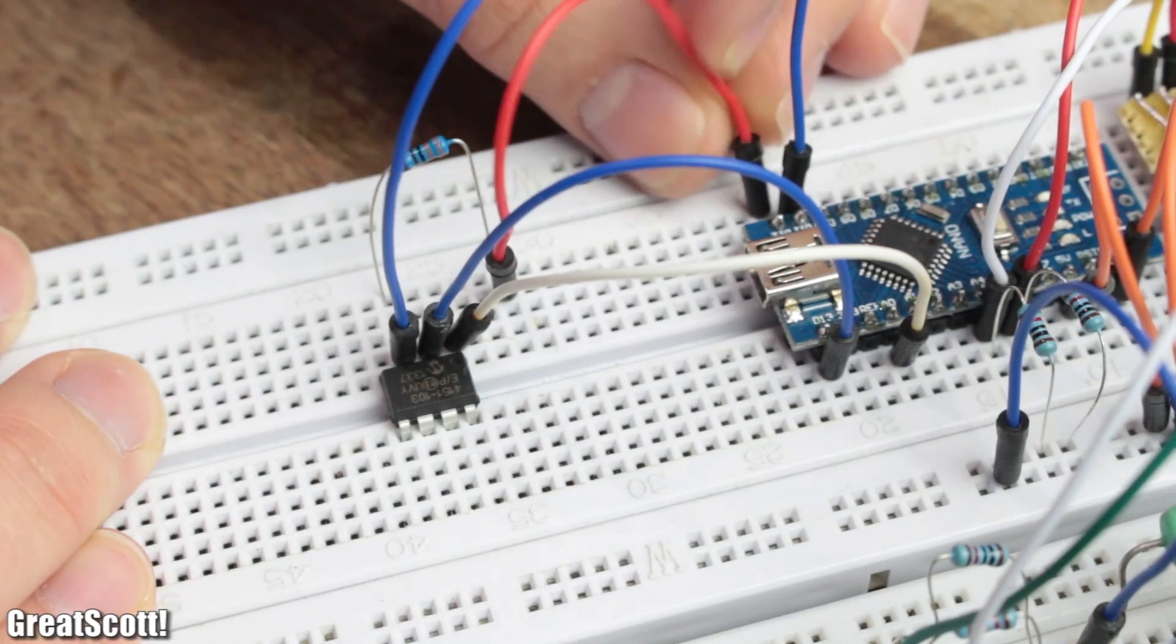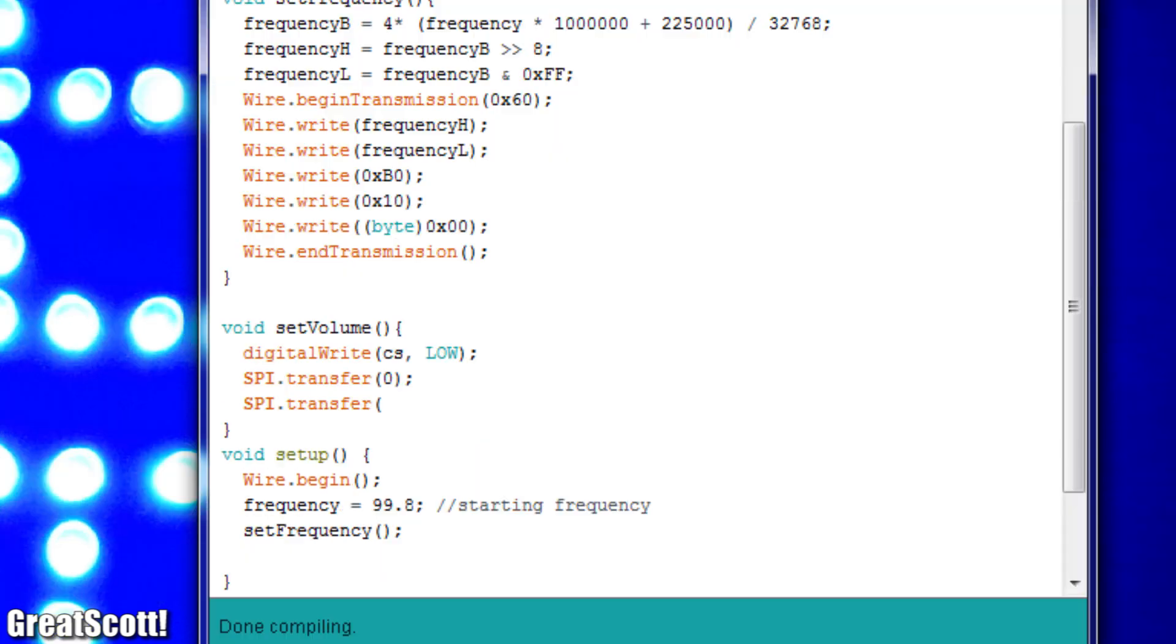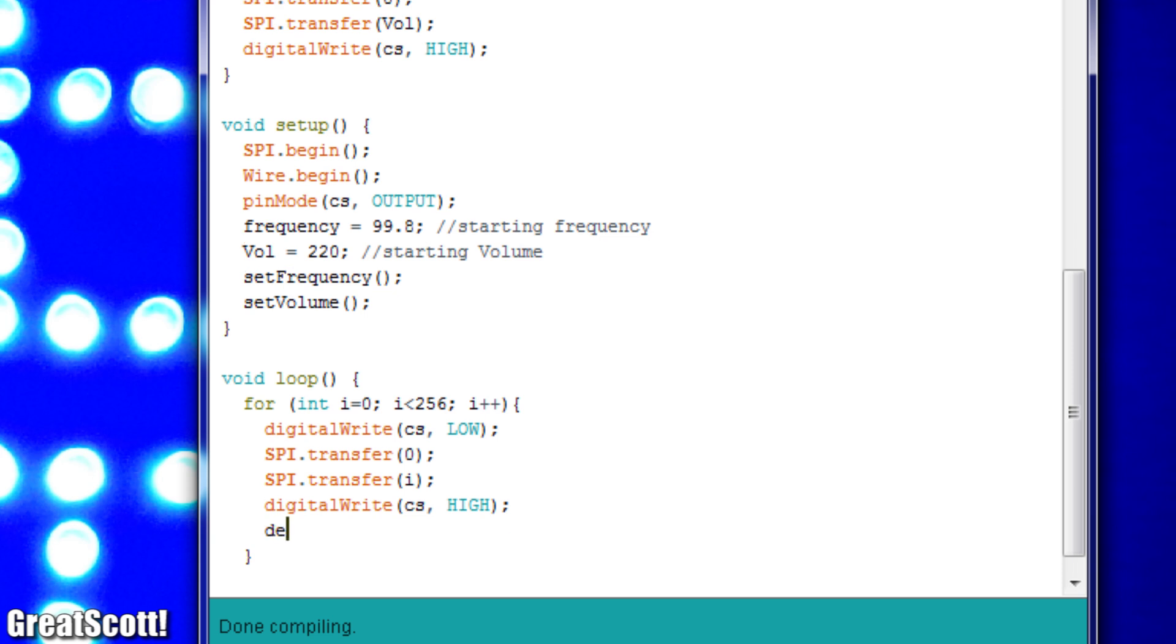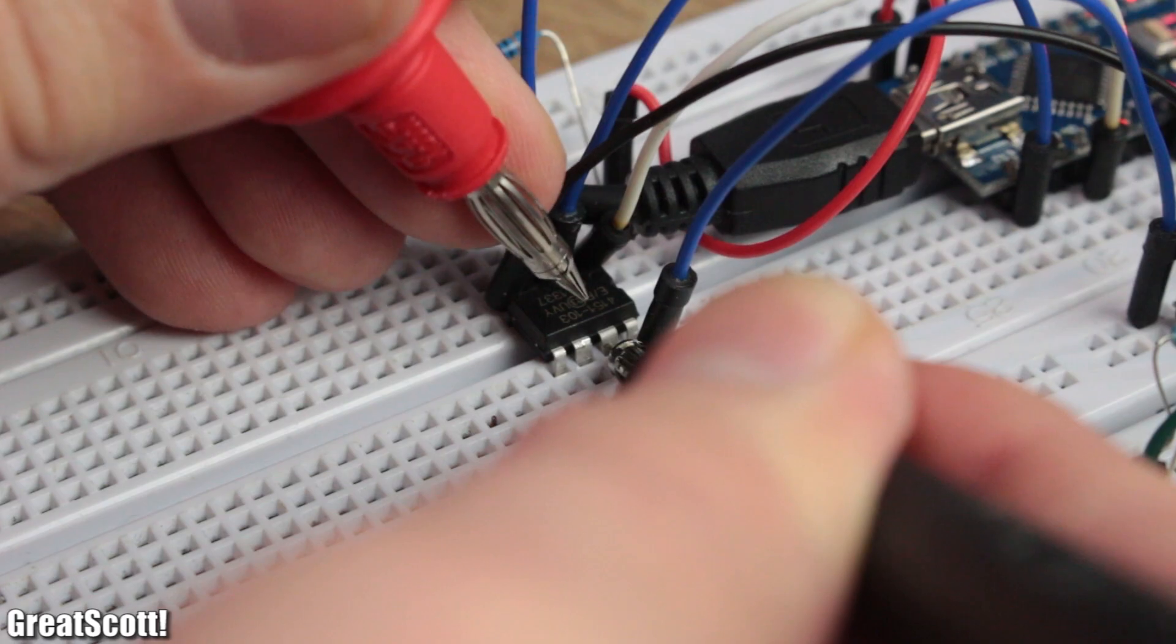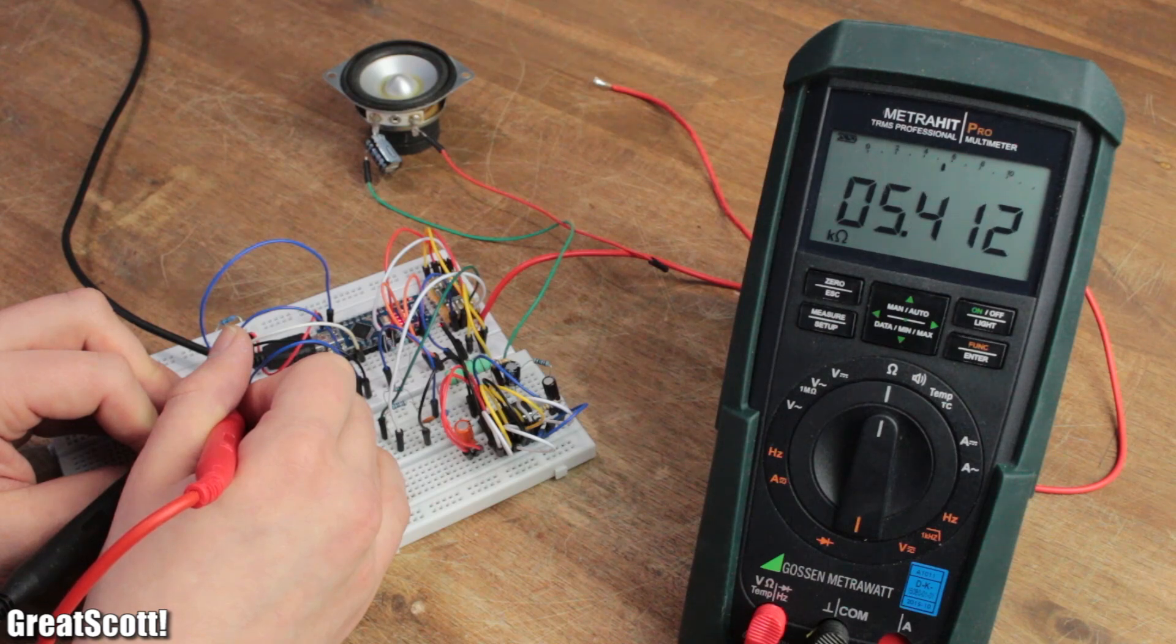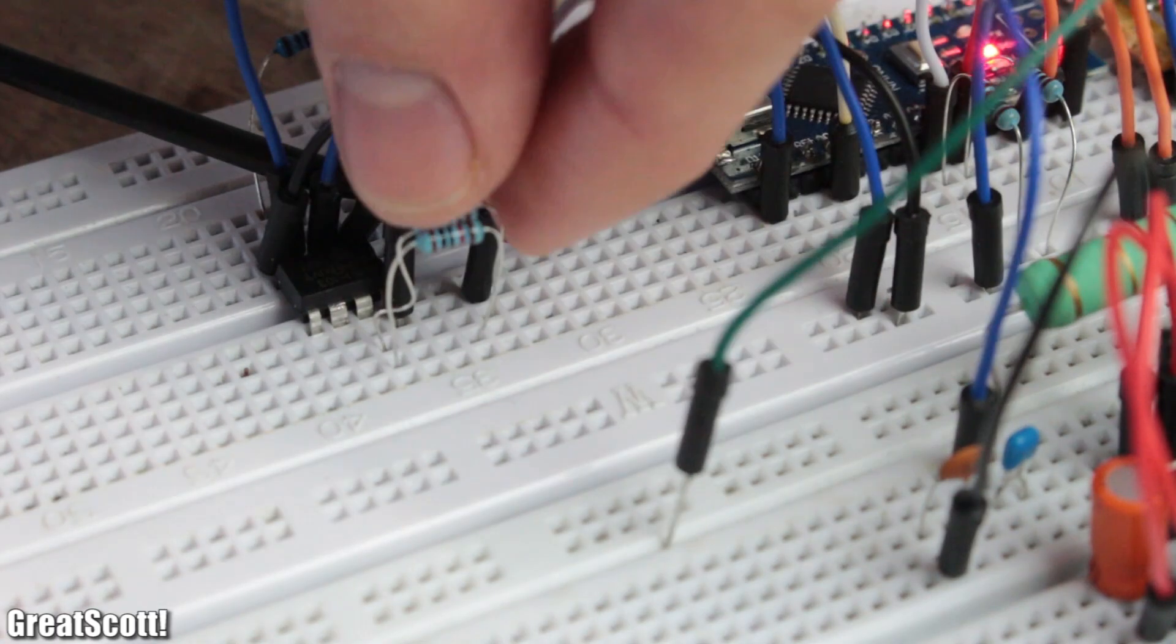Firstly it needs to connect to the predetermined SPI pins of the Arduino in order to work correctly. And secondly we can easily use the SPI library to send out values between 0 and 255. Here I'm using a simple for loop to slowly increase the send value which therefore increases the resistance between one side of the potentiometer and the wiper.